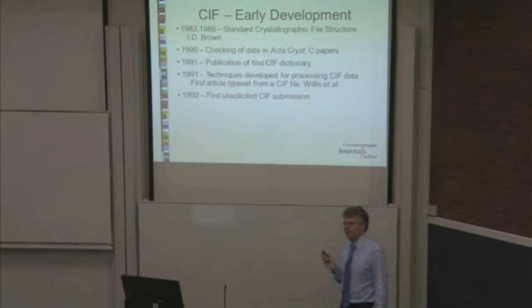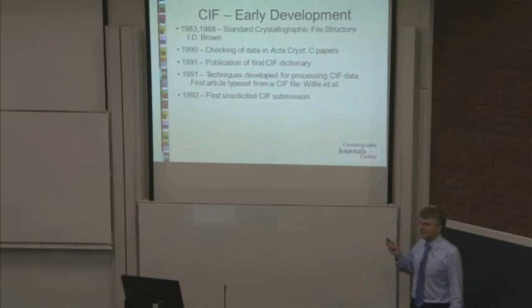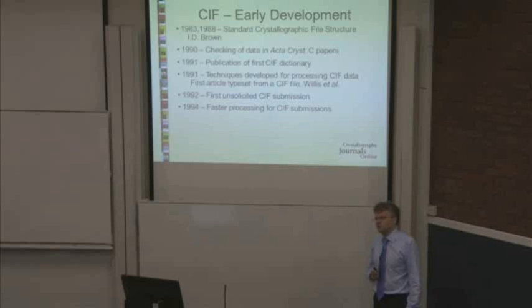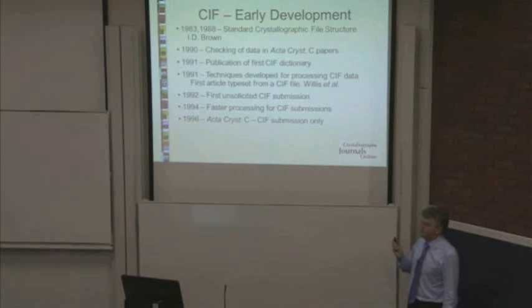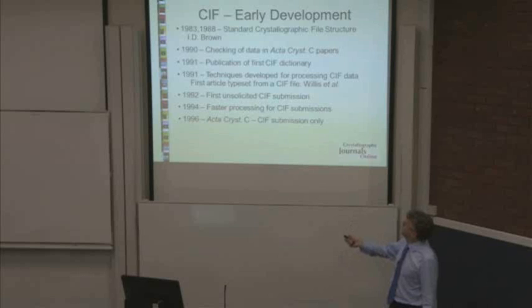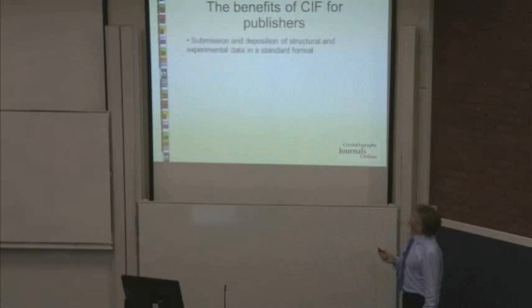Within a year we had our first unsolicited CIF submission, which we weren't expecting. This speeded up the process and we really had to do something to automatically work with these. Within two years, the workflow was in place where we could guarantee faster processing for any article submitted in CIF format. And by 1996, Acta Crystallographica Section C became a CIF-only journal — you could only submit by CIF. So five years from the first CIF to mandatory. It's quite quick.